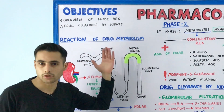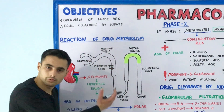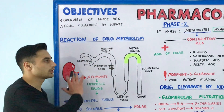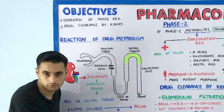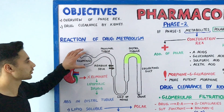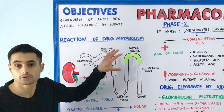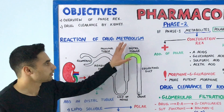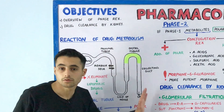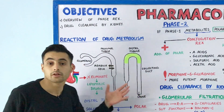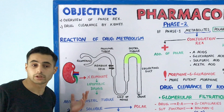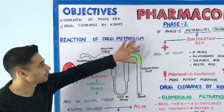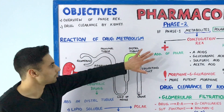Let's do a little revision. We know that in our kidney we have millions of nephrons. The nephron consists of the glomerulus portion, the proximal portion, the loop of Henle, the distal portion, and the collecting duct.